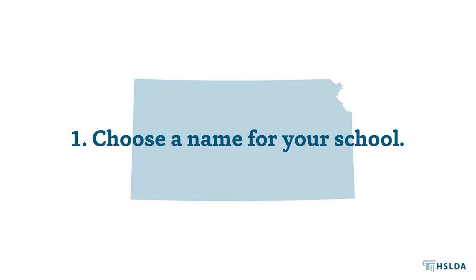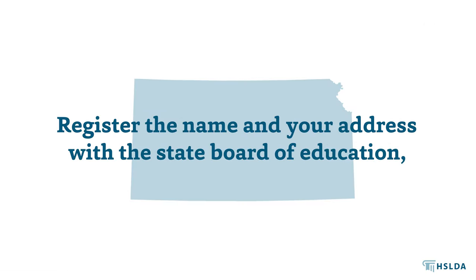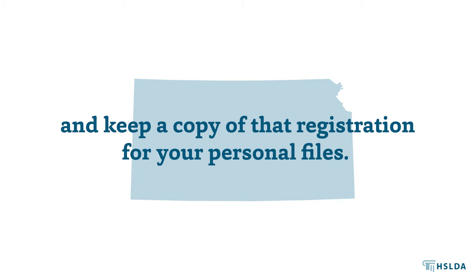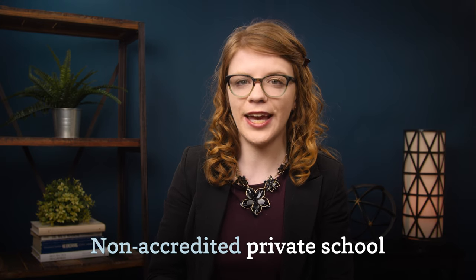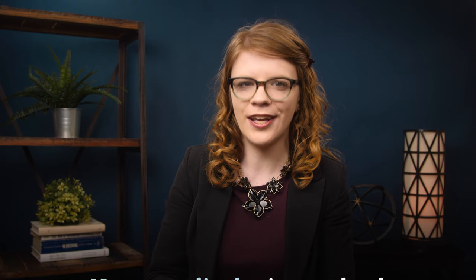First, choose a name for your school. Register the name and your address with the State Board of Education, and keep a copy of that registration for your personal files. You only need to register your private school's name once, when you start homeschooling. Remember, it is important to always refer to yourself as a non-accredited private school when dealing with Kansas officials. Don't call yourself a homeschool.